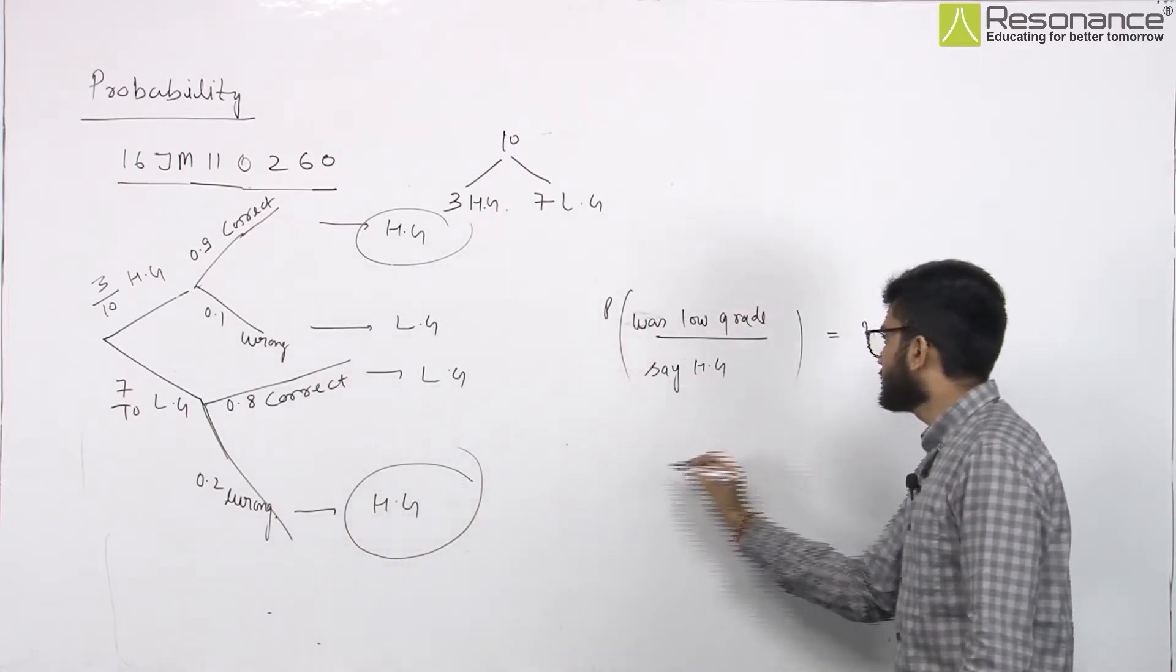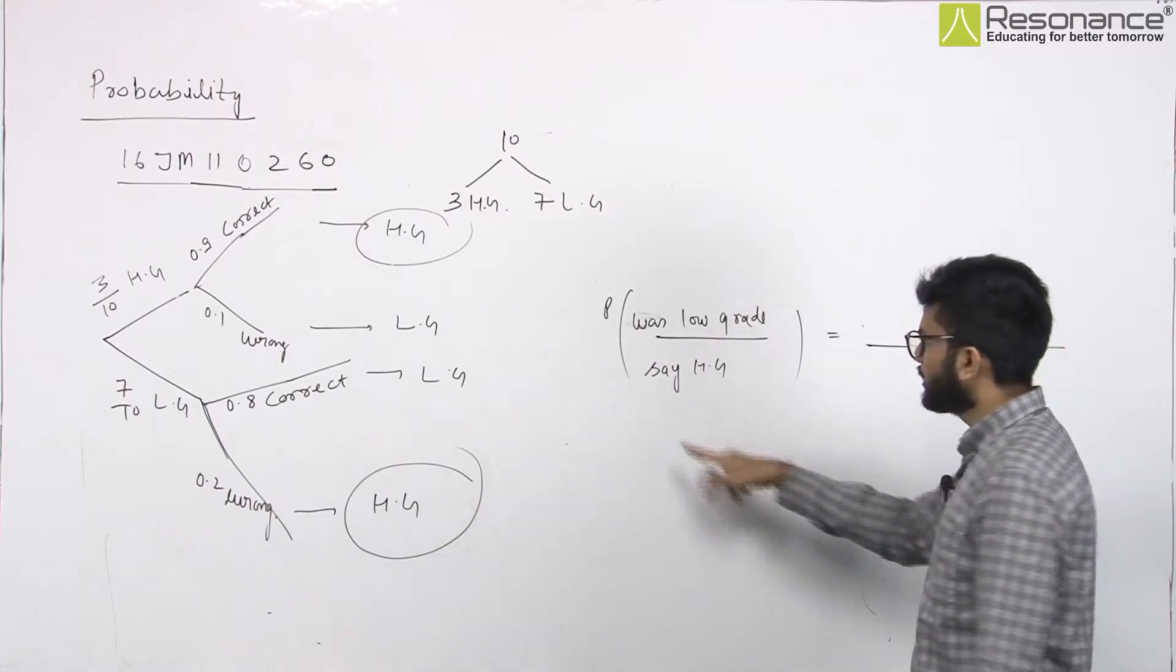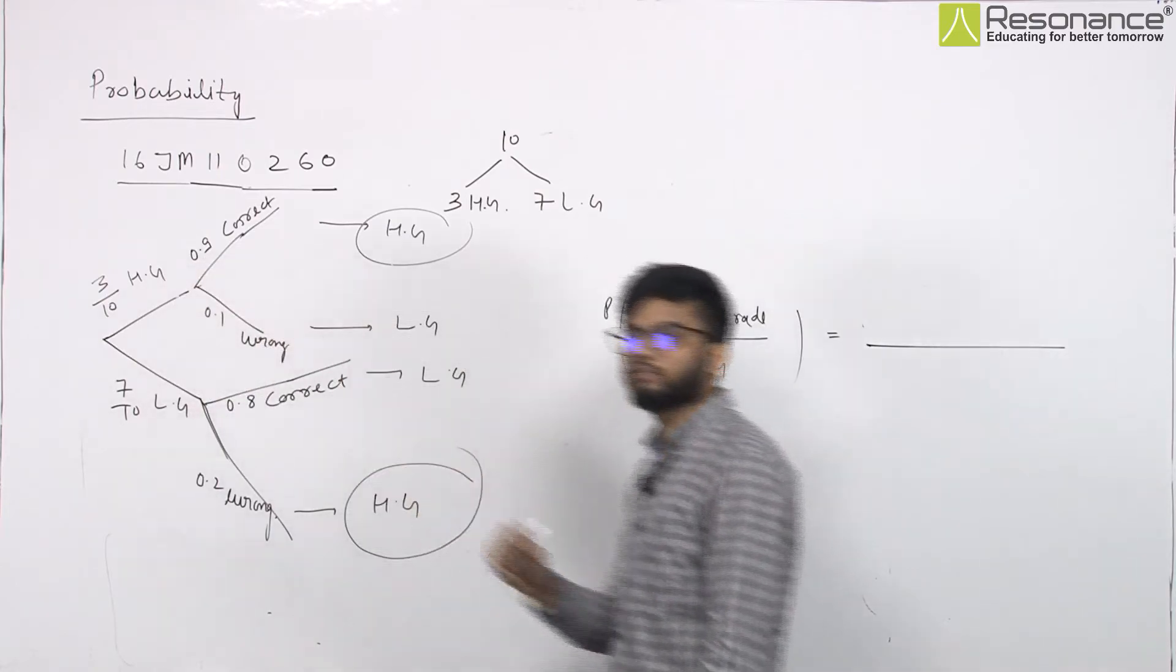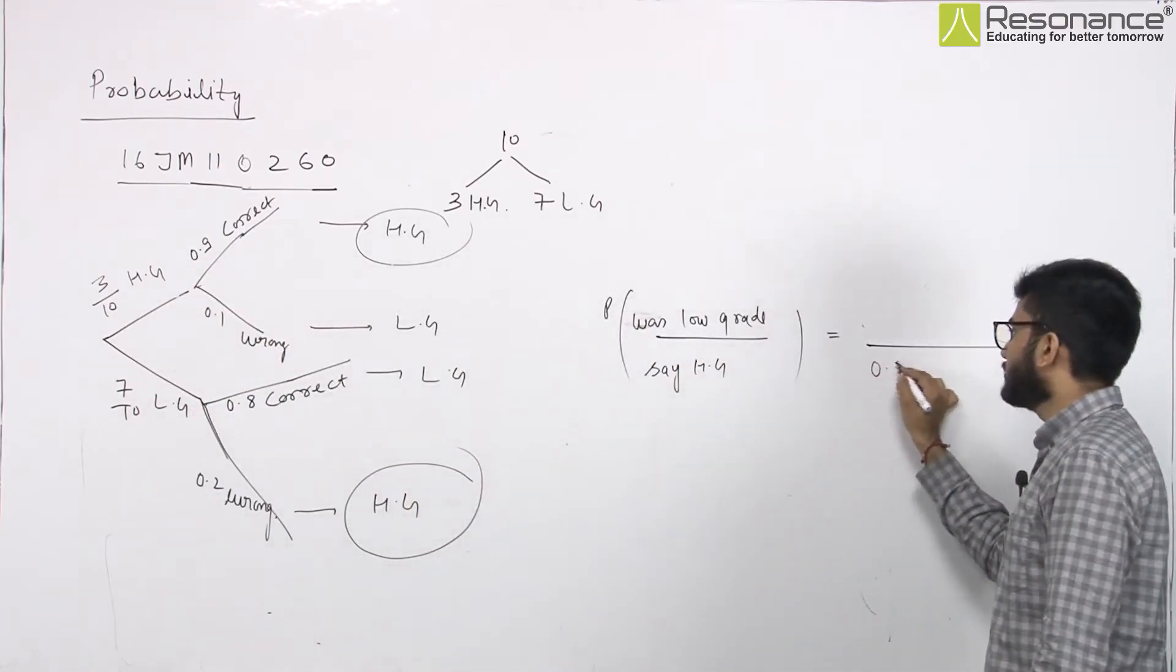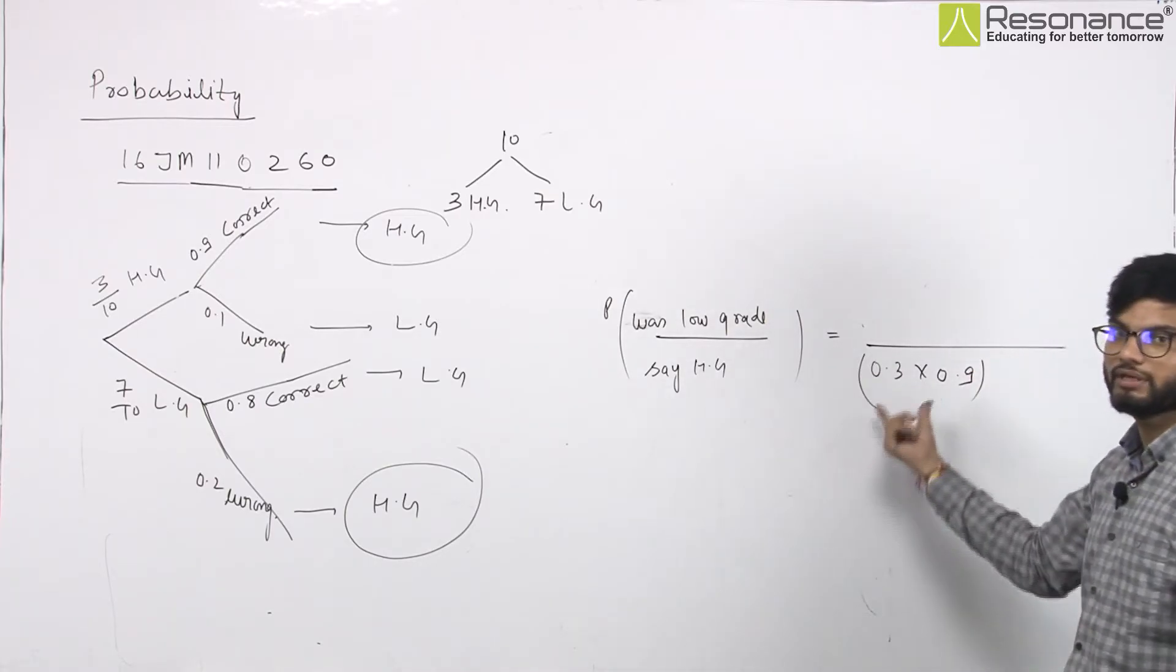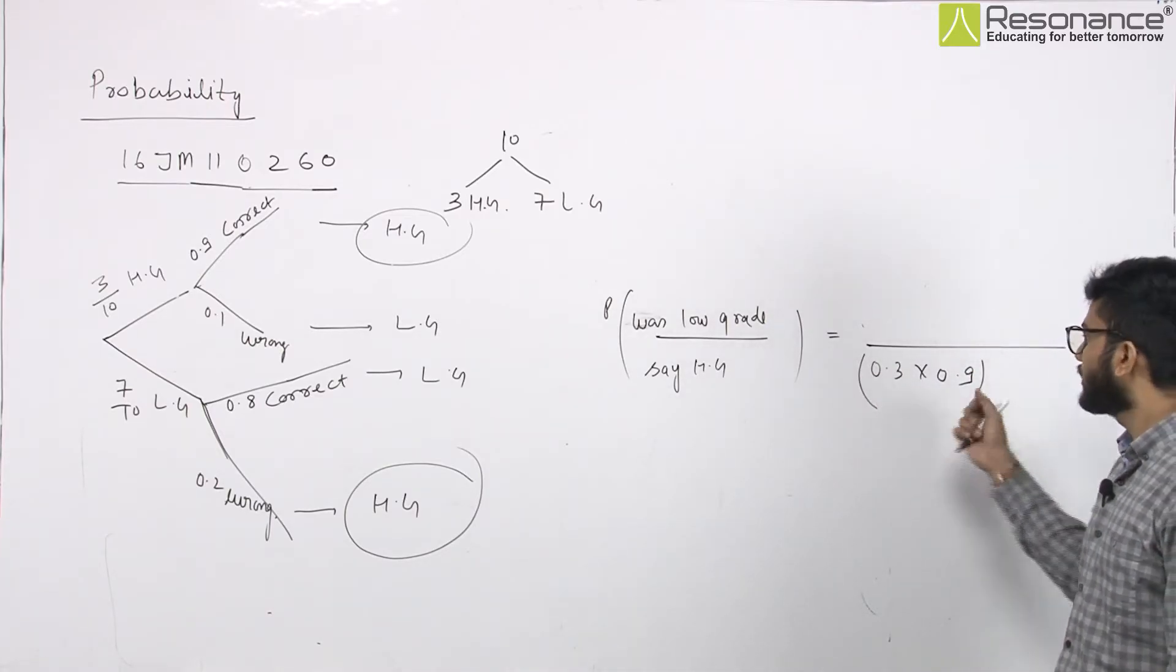So, we will calculate the high grade. How can we say high grade? The rest of it was high and correct, so 0.9 into 0.3. These are my chances.